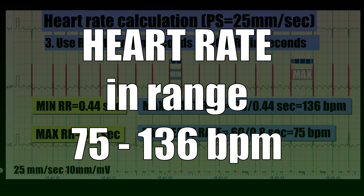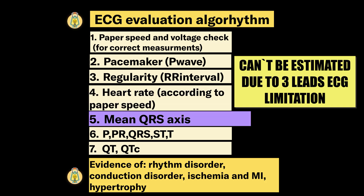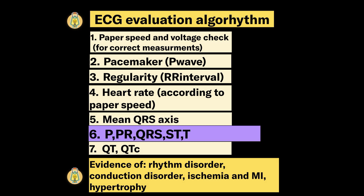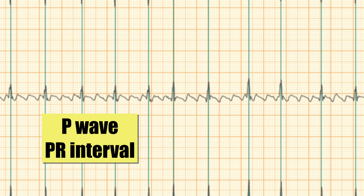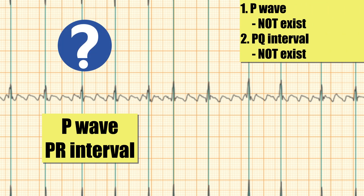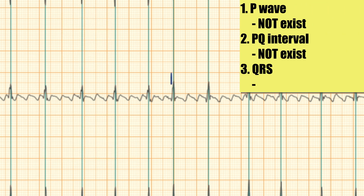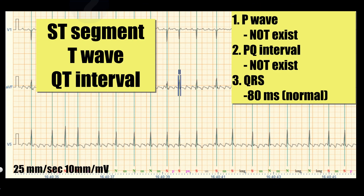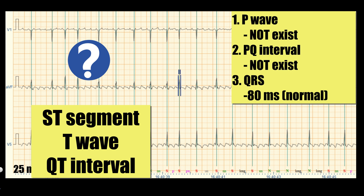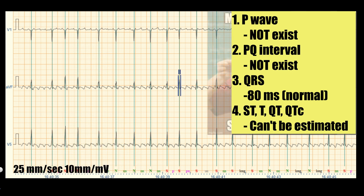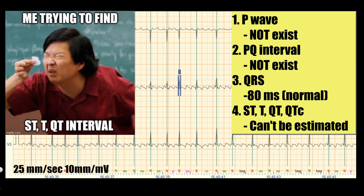The next step would be mean QRS axis calculation, but due to the limitation of a 3-lead ECG we can't do this. So we move to measurements of P, PR, QRS, ST, and T wave. Both the P wave and PR interval do not exist due to the absence of the P wave. The QRS complex is equal to 2 small boxes or 80 milliseconds, which is within the normal range. ST segment, T wave, QT interval, and corrected QT interval cannot be estimated because the sawtooth waves deform the ST and T wave.